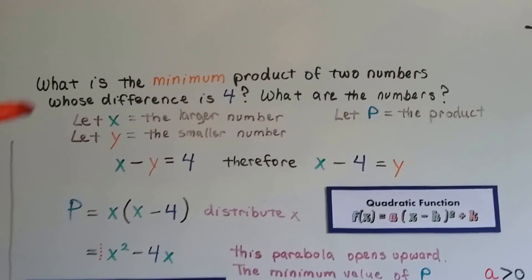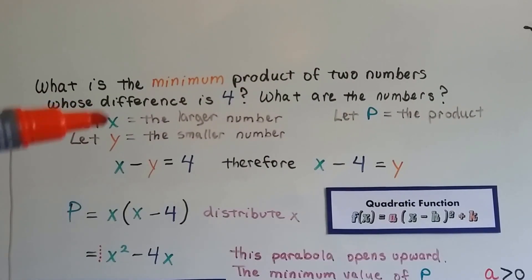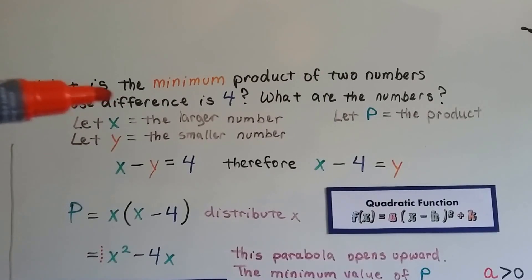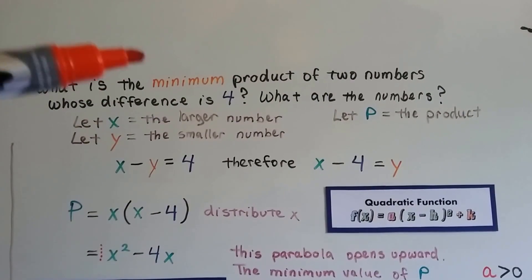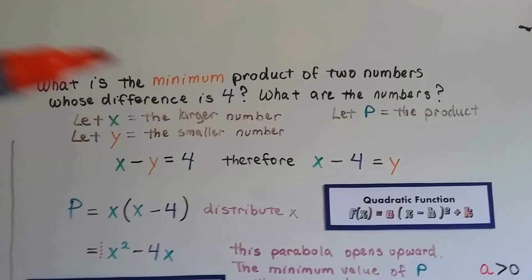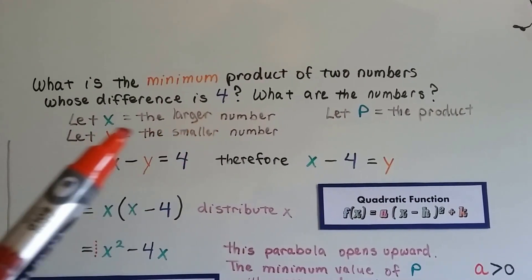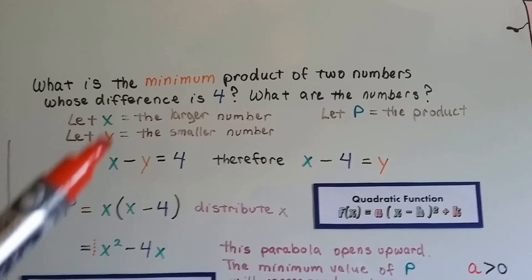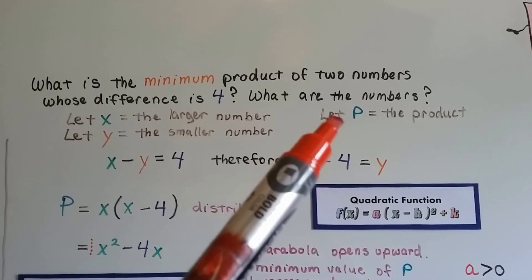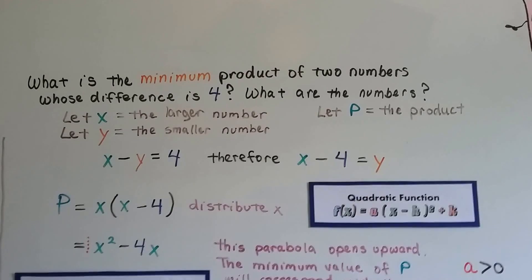What's the minimum product of two numbers whose difference is 4? What are the numbers? We're going to let x equal the larger number, because if we're doing a difference, we're doing subtraction. In subtraction there's a larger number that you're taking away a smaller number from. That's going to be y, and that equals our difference. When we multiply x and y together, that's going to be our minimum product, so we let P be the product.